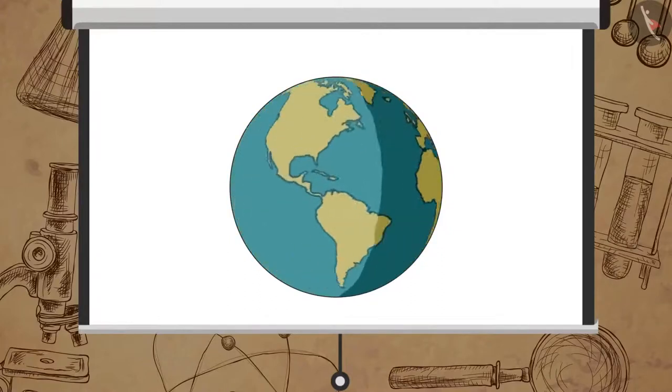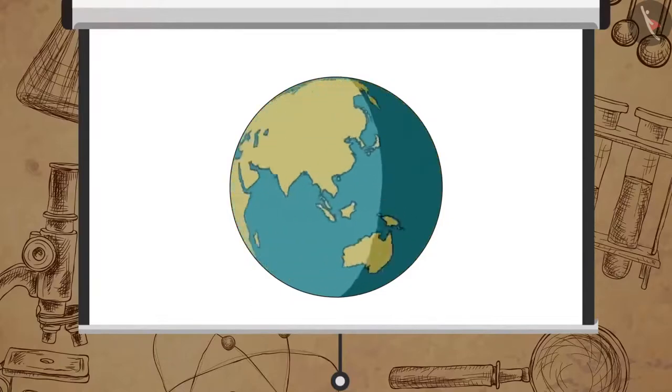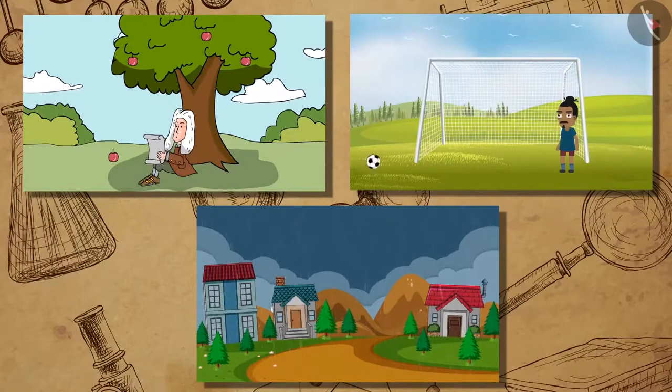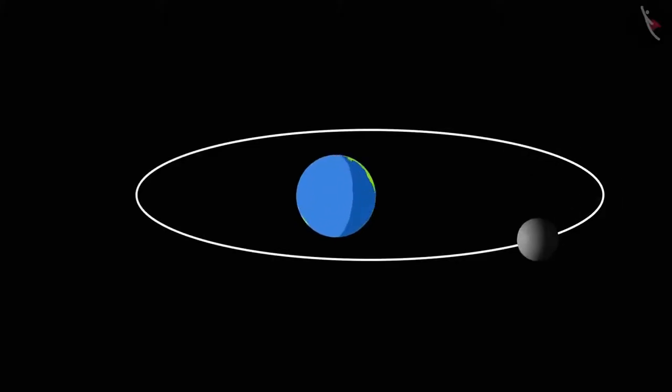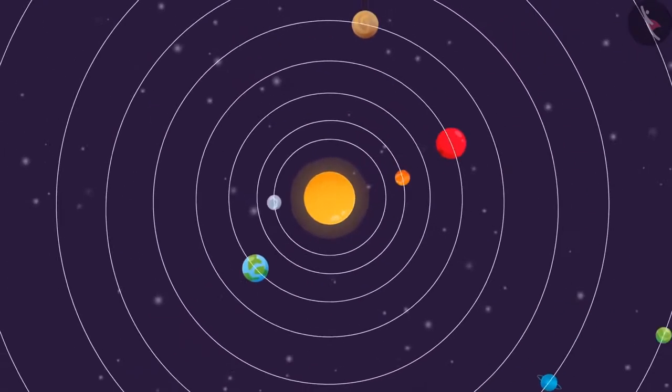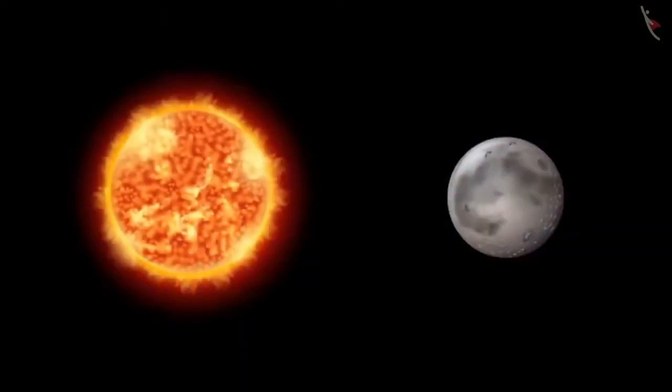Newton's universal law of gravitation explained some very important occurrences on earth. It proved the existence of a force that binds all of us to the earth. It proved how it is possible for the moon to be in motion around the earth and also how it is possible for the planets to revolve around the sun. It also explained the phenomenon of tides, which occur due to the gravitational pull of the moon and the sun. So, that's a physics lesson fishermen need to remember.